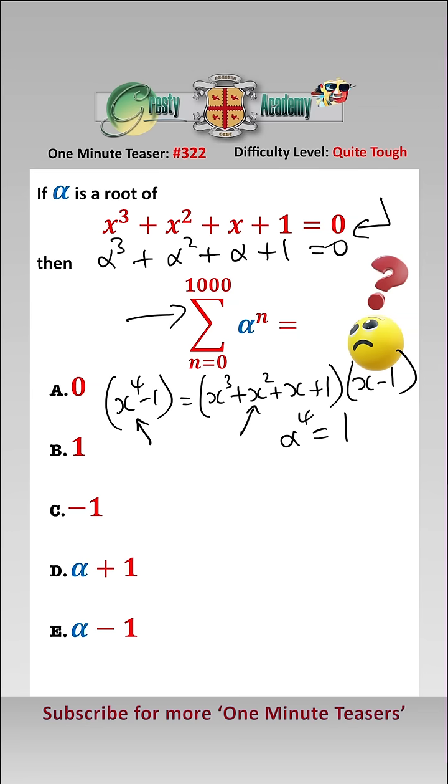Looking at the first few terms of this, we have alpha to the thousand is equal to alpha to the four to the 250, which equals one, as alpha to the four is equal to one.